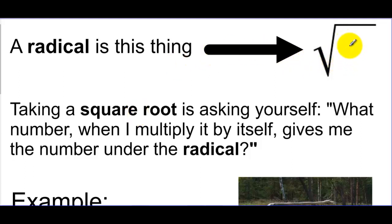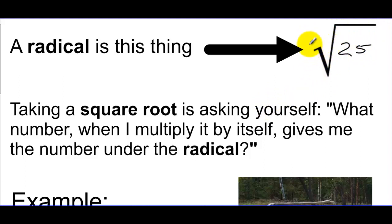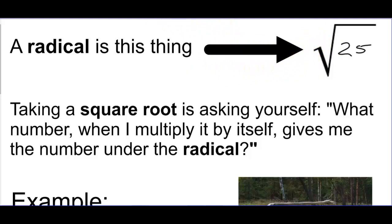As a simple example, if I were to put a 25 underneath this radical, this is a square root because there's nothing else to indicate otherwise. I could put a 3 here, and that doesn't mean square root anymore — you'll see that later. But for our purposes, when there's nothing there, we are talking about square roots. So what we're saying for this problem is: what number, when I multiply it by itself, gives me 25?